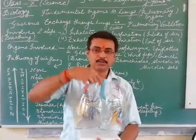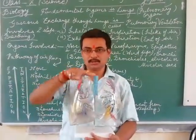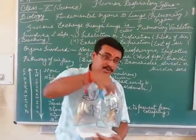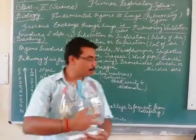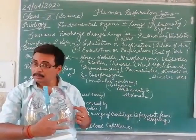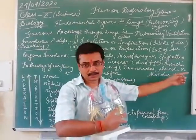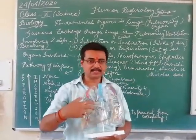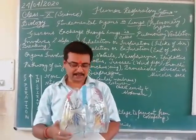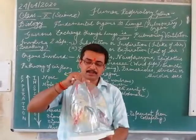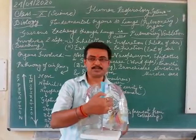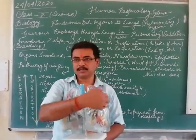The trachea goes down into two structures — each one is called a bronchus. The bronchus moves into smaller pipes called bronchioles, and finally into the alveoli. These are the lungs, with the heart situated in between. You can see the bronchioles and the alveoli at the ends.